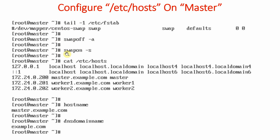Again you can check with 'swapon -s' whether any swap partition exists — you will see that no swap partition is present. When implementing the cluster, DNS implementation is a must. Your system should be able to resolve all cluster nodes by DNS name: master.example.com, worker1.example.com, worker2.example.com.